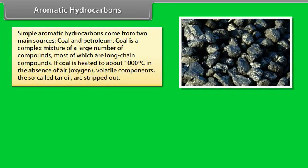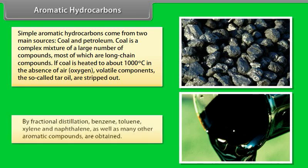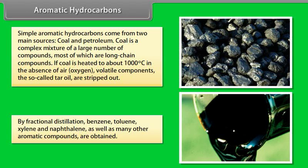Simple aromatic hydrocarbons come from two main sources: coal and petroleum. Coal is a complex mixture of a large number of compounds, most of which are long-chain compounds. If coal is heated to about 1000 degrees Celsius in the absence of air or oxygen, volatile components — the so-called tar oil — are stripped out. By fractional distillation, benzene, toluene, xylene, and naphthalene, as well as many other aromatic compounds, are obtained.